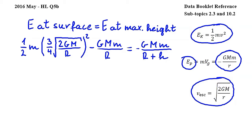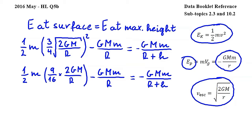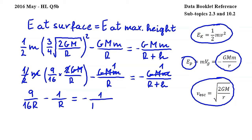Let's work further and simplify. We get one-half m, and squaring the expression in the parentheses gives 9 over 16 — the squaring eliminates the square root — times 2GM over R. So we have: (9/16) times (2GM/R) minus GMm over R, equal to negative GMm over (R plus H). We can cancel several things: first the one-half and the 2, and also lowercase m, G, and capital M from both sides. We end up with 9 over 16R minus 1 over R equals negative 1 over (R plus H).